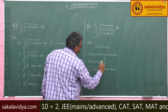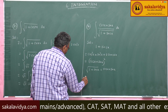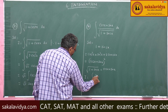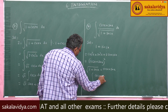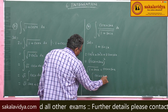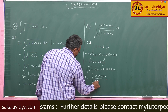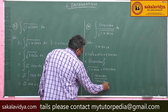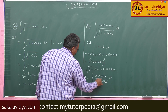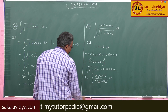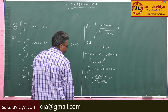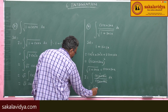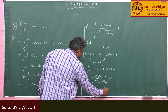Therefore, the square root of 1 plus sin 2x equals cos x plus sin x. So i becomes the integral of (cos x plus sin x) divided by (cos x plus sin x) dx. These cancel, leaving the integral of 1 dx, which equals x plus a constant.